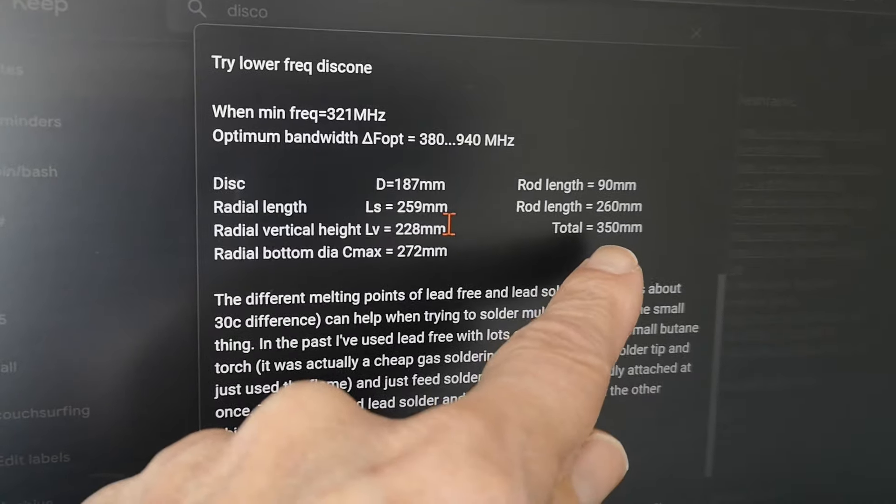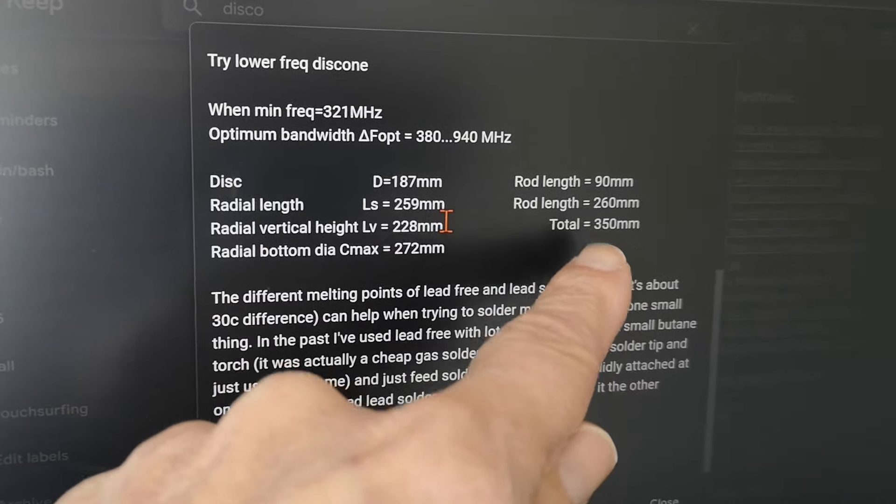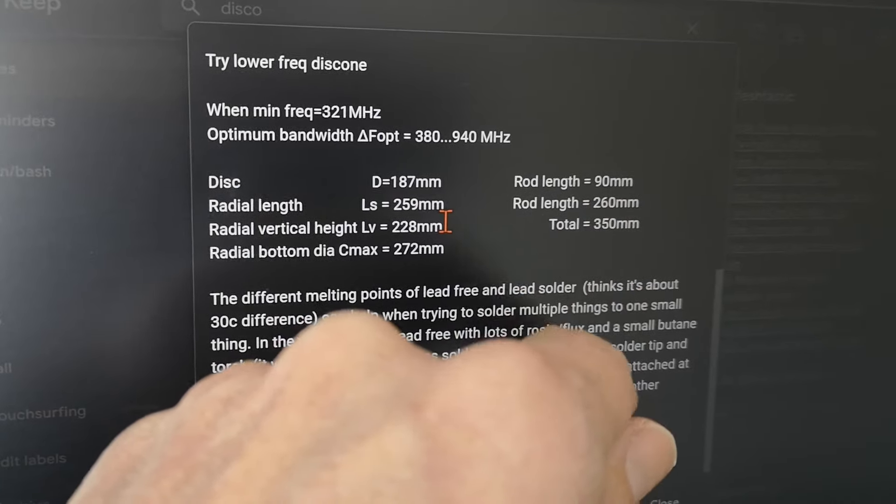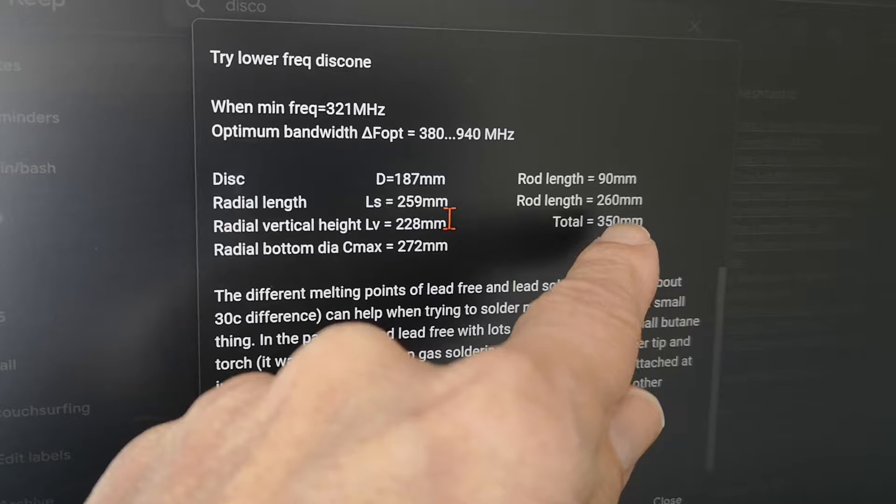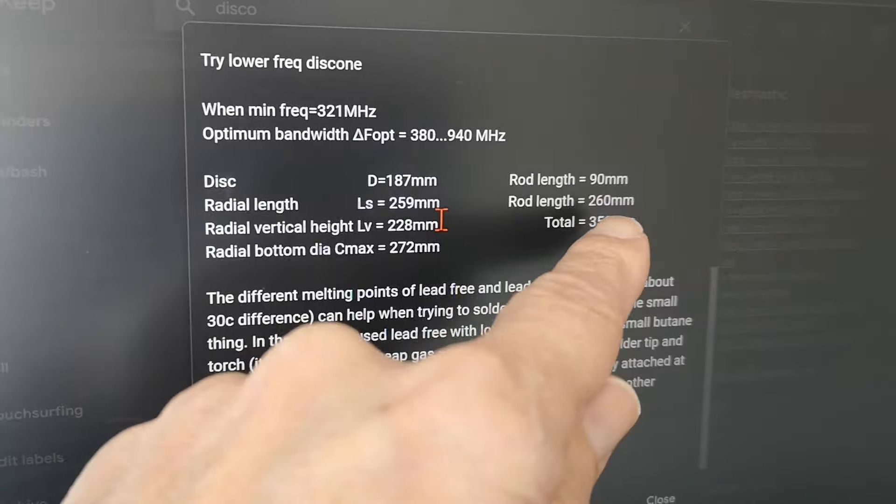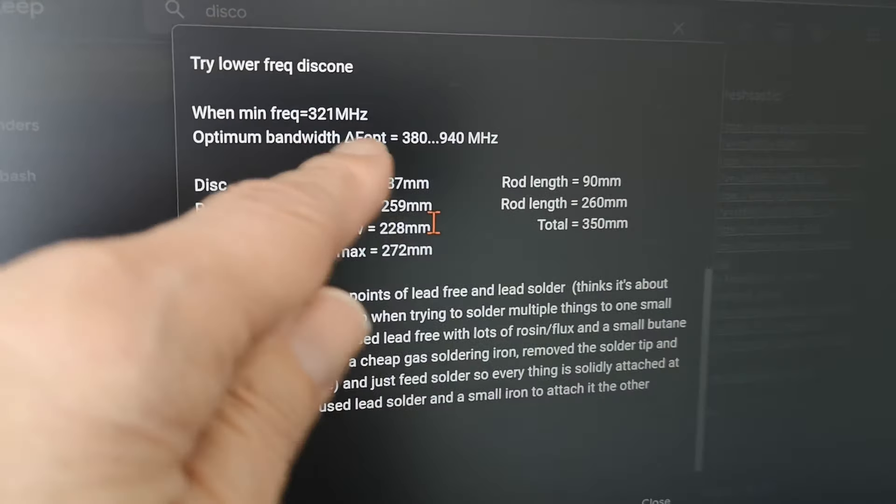Each rod I sawed into two lengths for the lower and the upper elements of the antenna, and being lazy I only wanted to make one saw cut instead of two, so I chose those lengths and played with numbers until I only had to make one saw cut.